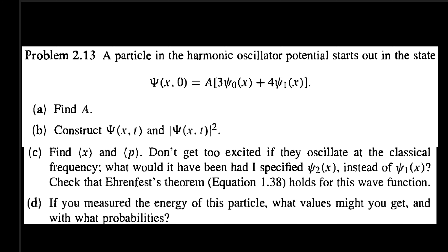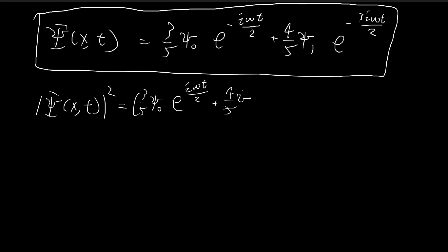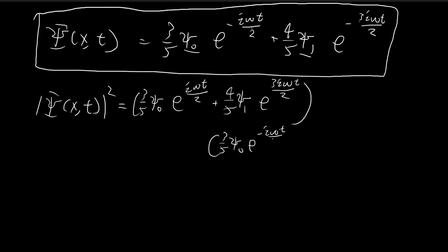Now the second thing we need to find is the modulus squared of the wave function, which is the term we integrate when looking for probabilities. We need to take the conjugate and then multiply it by the original function. When we take the conjugate, the imaginary component becomes positive. Since xi 0 and xi 1 are both real, we can leave them as is, and we just need to flip the sign on the exponentials. Multiplying the conjugate by the original wave function, we pull out 1 over 25 as a common factor.